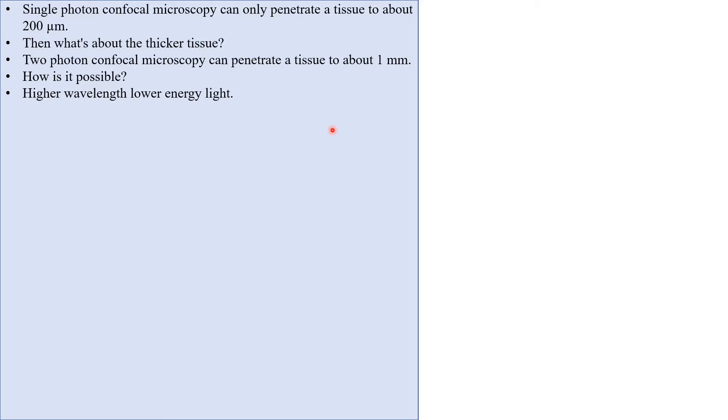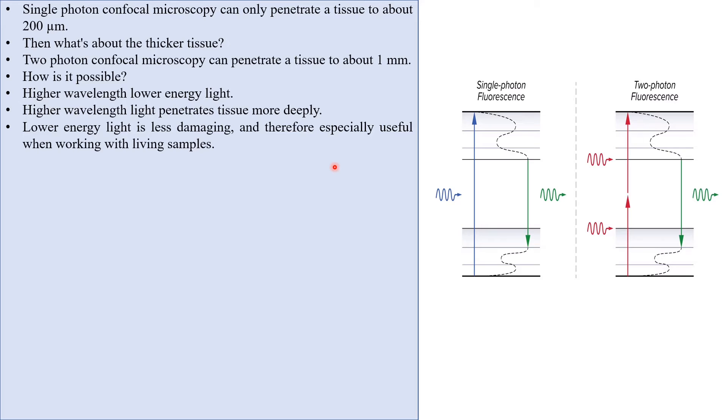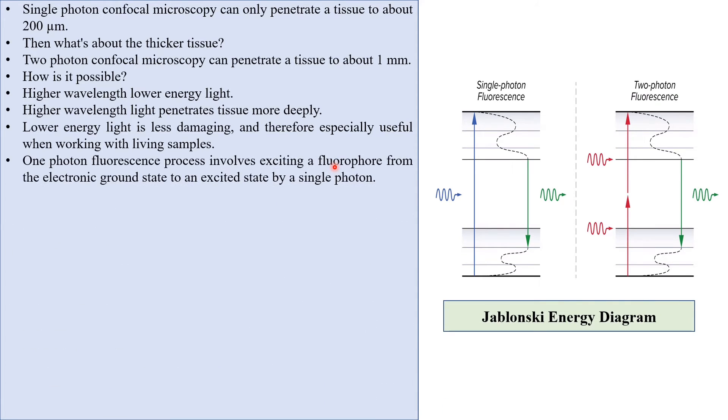Two photon microscopy uses higher wavelength, lower energy light. Higher wavelength light penetrates tissue more deeply. Lower energy light is less damaging and therefore especially useful when working with living samples. Now we should know where this higher wavelength light comes from.